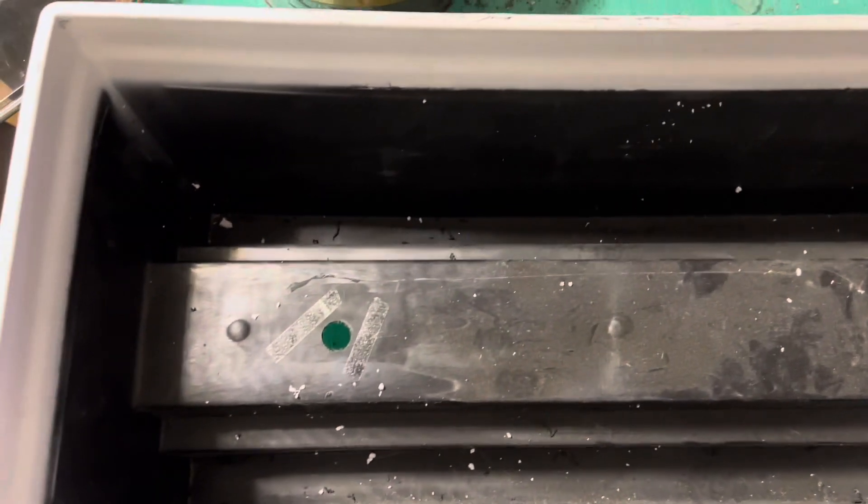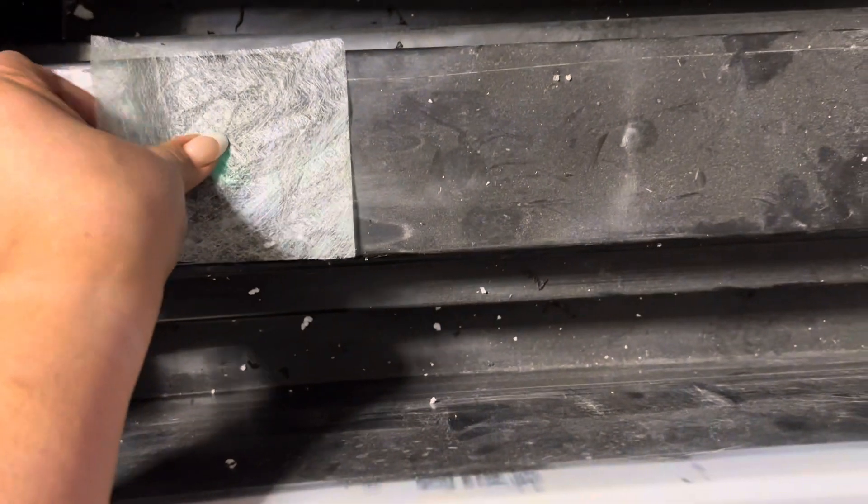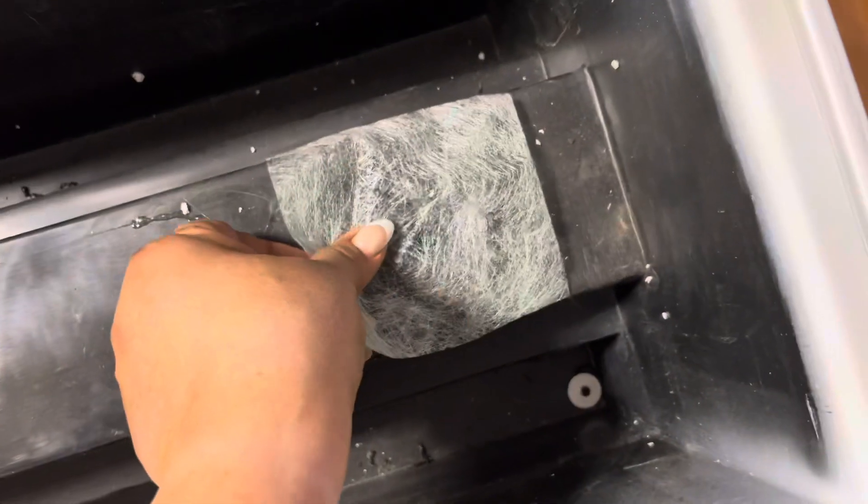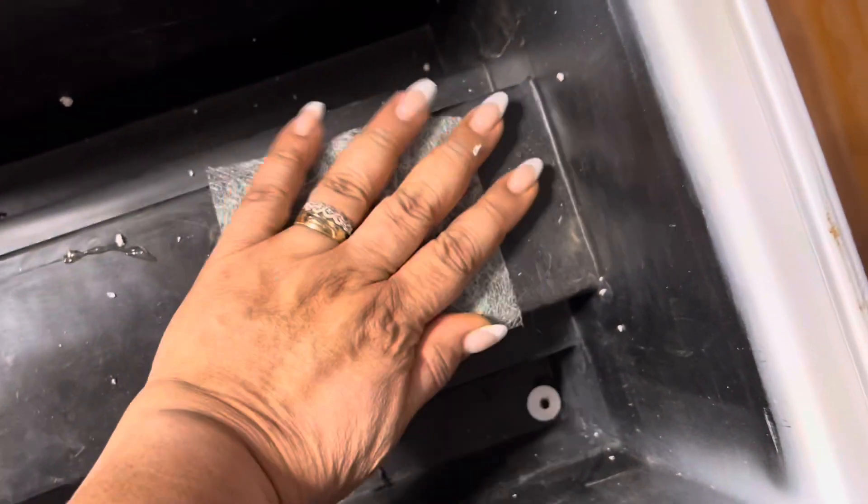All right, so first of all I made these holes. Those two holes I'm gonna cover them up with, I have two-sided sticky tape on here. I'm gonna cover them up with this here weed block.